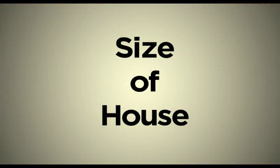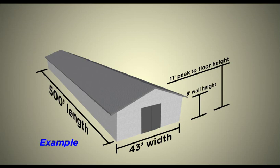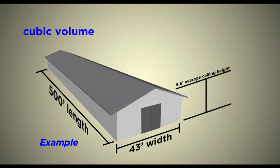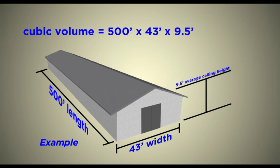To get things started, let's calculate the size of your poultry house. We need to calculate the average ceiling height. To do this, we will take the wall height — 8 feet tall — and add it to the height of the ceiling at its peak — 11 feet tall — then divide by 2. That gives us 9.5 feet as our average ceiling height. To get the cubic volume of the house, we multiply the house length (500 feet) by the house width (43 feet) by the average ceiling height (9.5 feet). The cubic volume of the house in this example is 204,250 cubic feet.